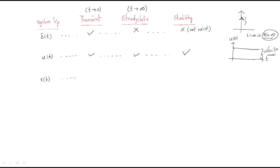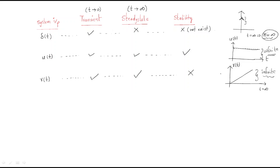The next signal is the ramp signal. The ramp signal consists of the transient state and also has the steady state, but it does not have stability. For the ramp signal, at time t equal to infinity the magnitude becomes infinite — it is an unbounded signal. For the unit step it is a bounded signal with particular limits, but for the ramp it is an unbounded signal.